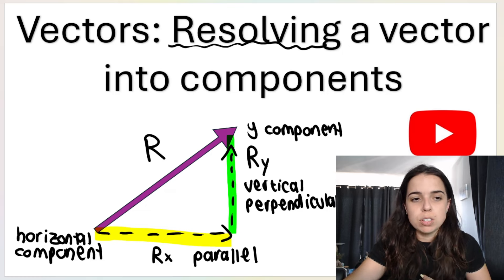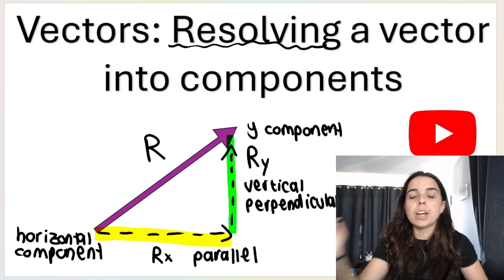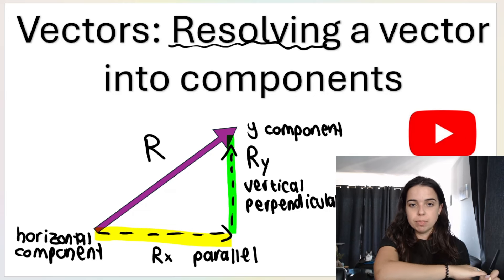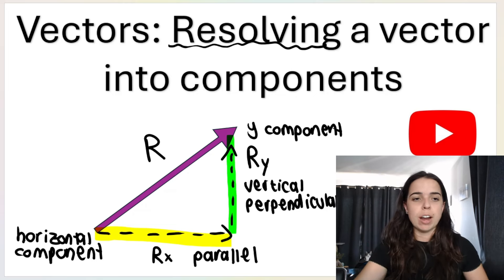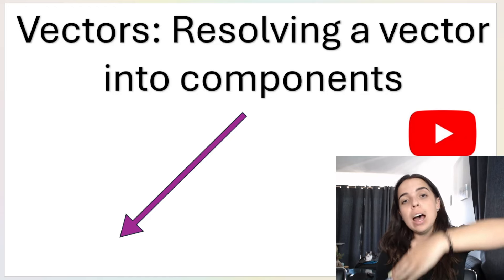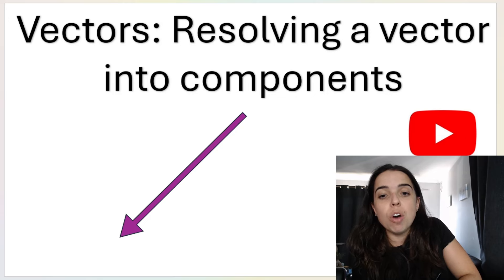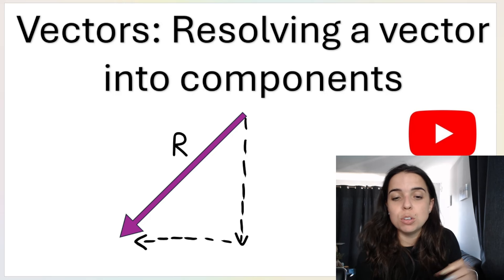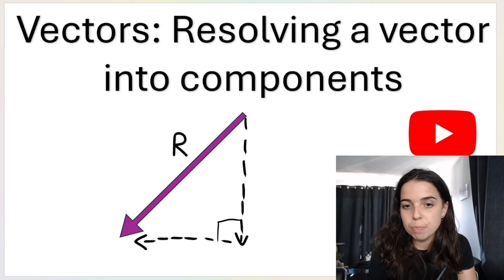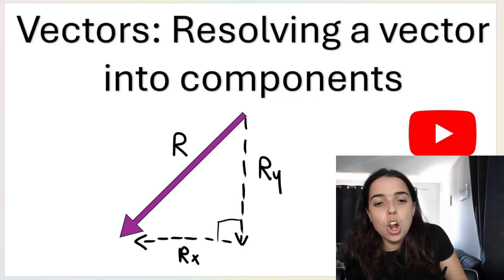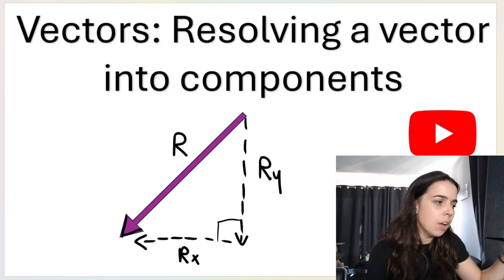What about this next vector? It is going up and to the right, so its y-component goes up and its x-component goes to the right. What about a vector going down and to the left? If I resolve that into its components, r_y will be going down and r_x will be going to the left. These component vectors are always at 90 degrees to each other. You can tell the direction of the components by looking at the way the original arrow is pointing.